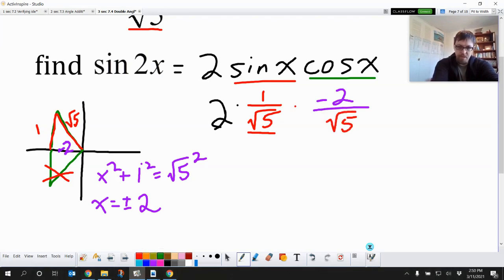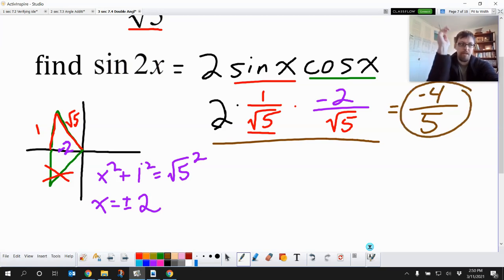So cosine is going to be negative 2 over square root of 5. Okay, cool. Now we just got to put this all together. Put it in a pie. And we're going to be great. So square root of 5 times the square root of 5 is just 5. And 2 times 1 is 2 times negative 2. We get negative 4 fifths for our answer.